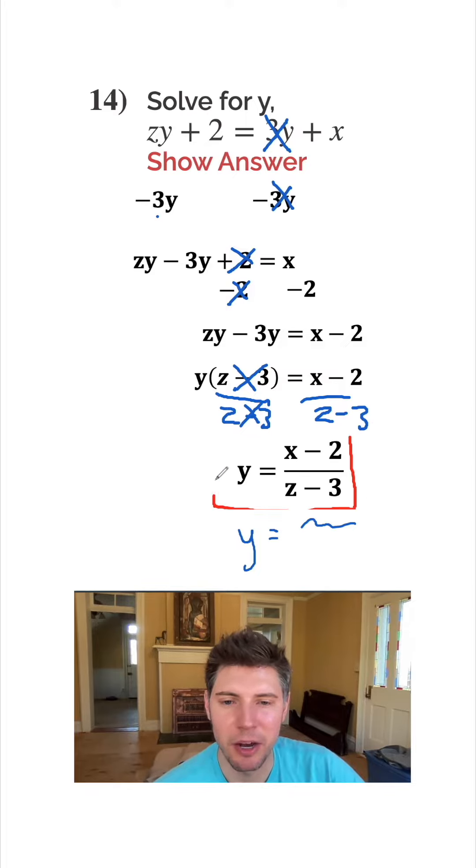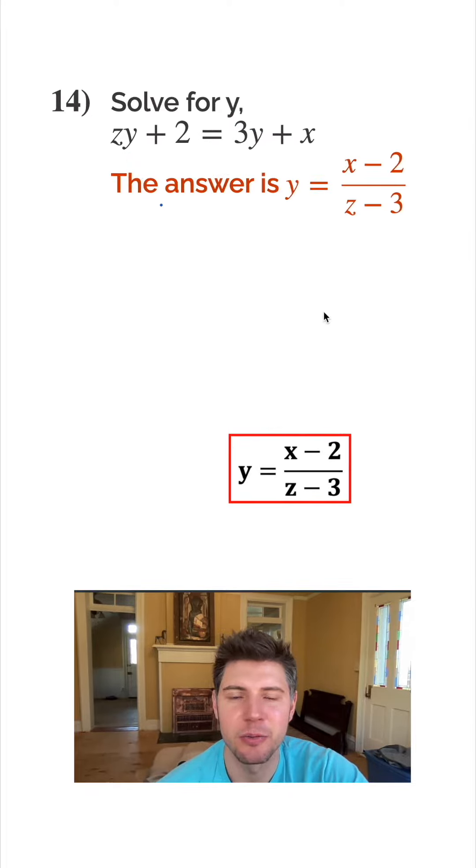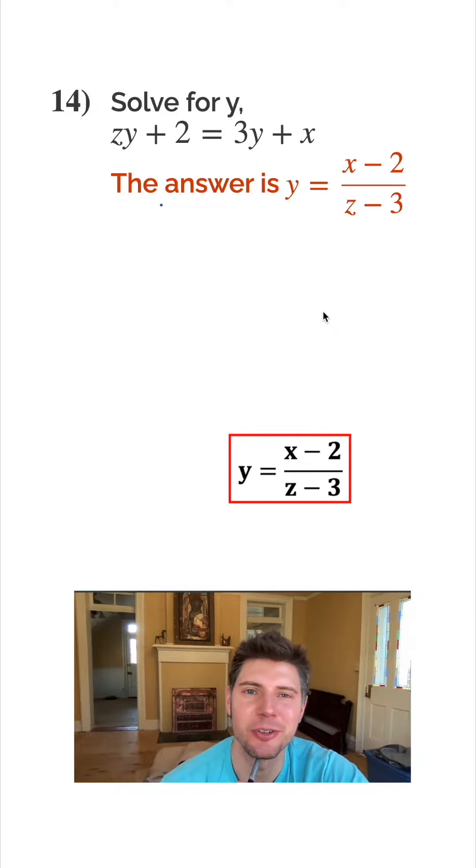So I'm going to put this in a box and let's check the answer. It's y equals x minus 2 over z minus 3. So we got it right.